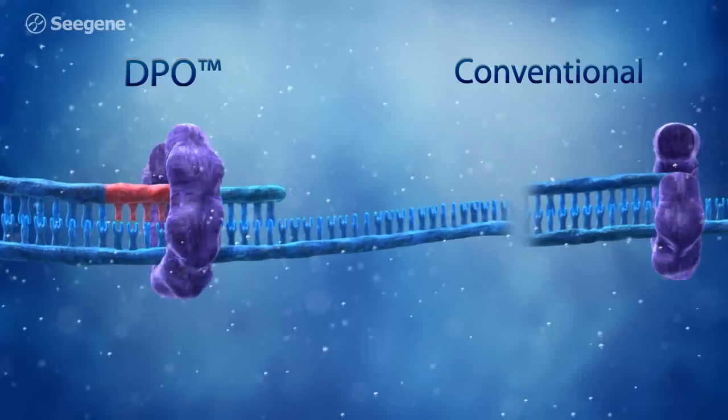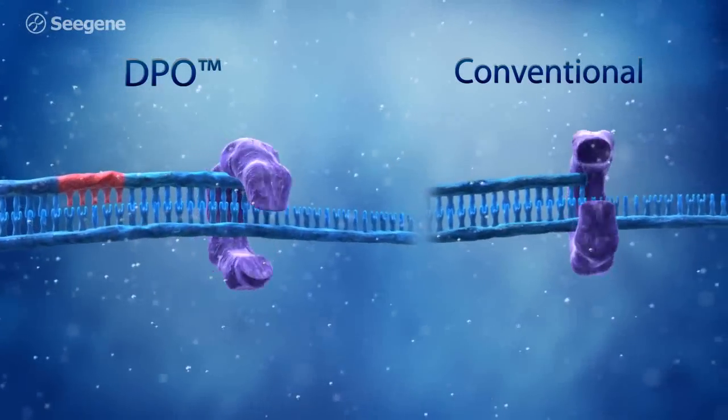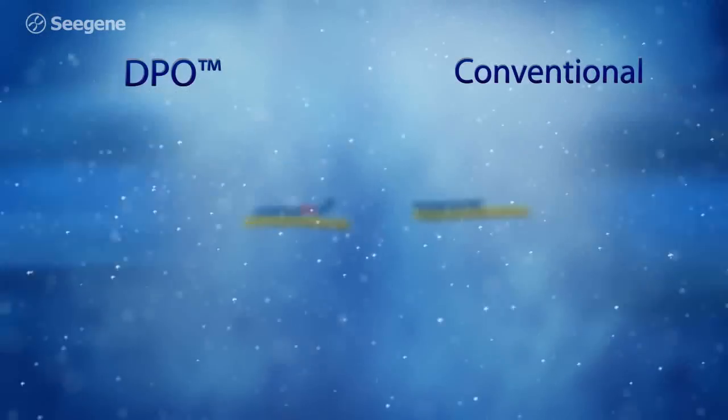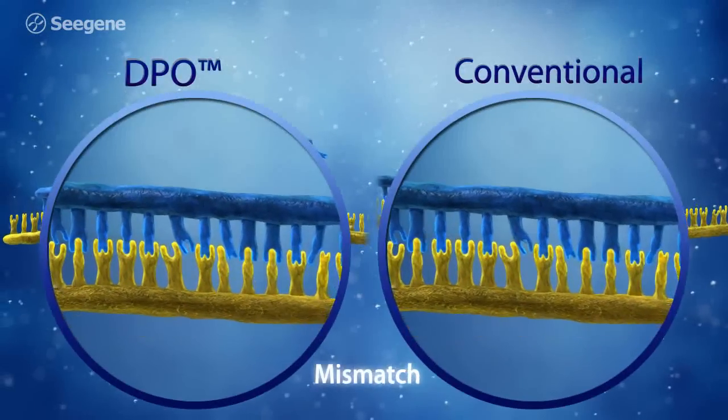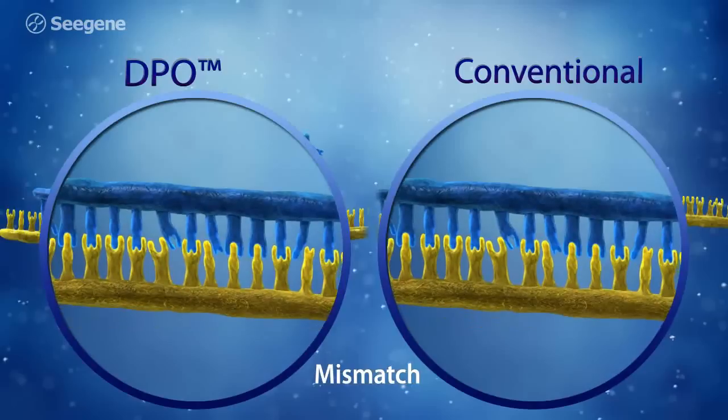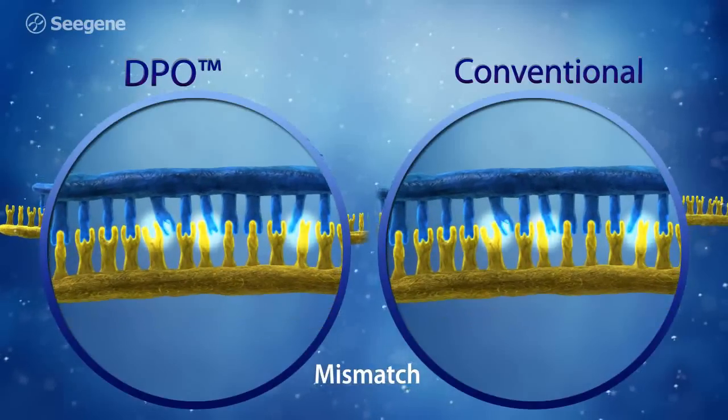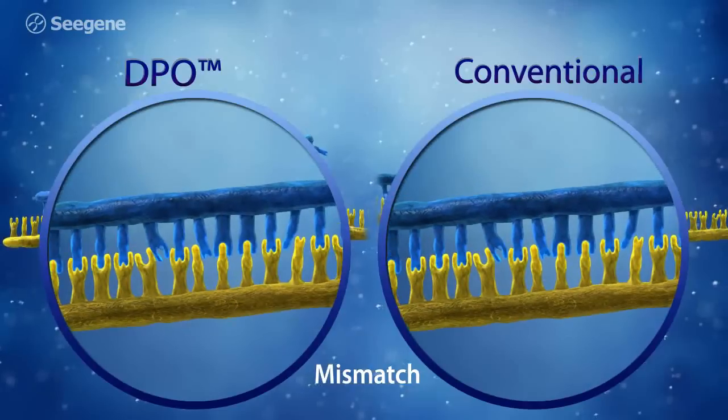Only target-specific extension will result from successful annealing of both the 5' and 3' portions of a DPO primer. Although the 5' portion can bind to a non-target sequence, the 3' portion will not. Therefore, non-target amplification does not occur.